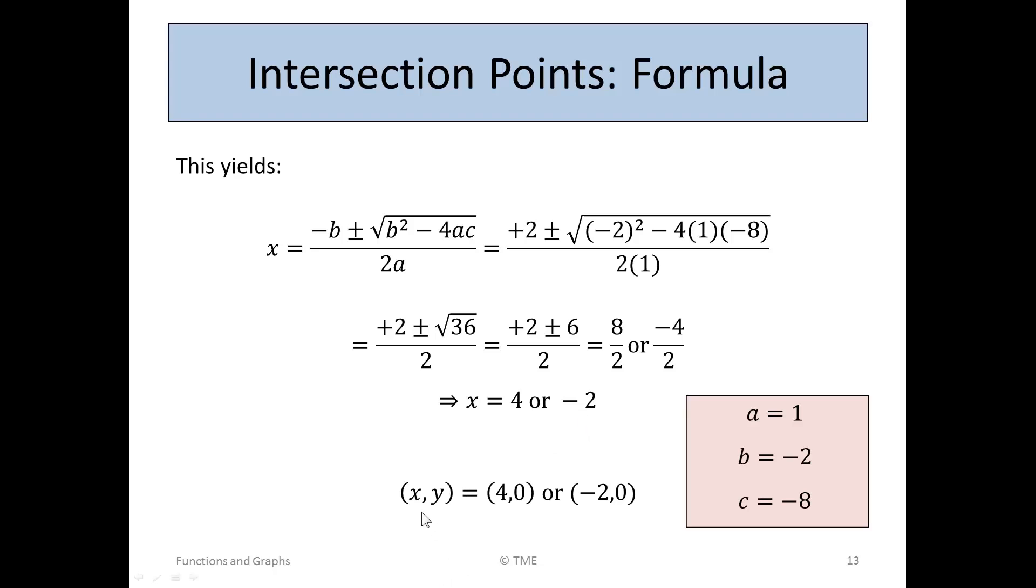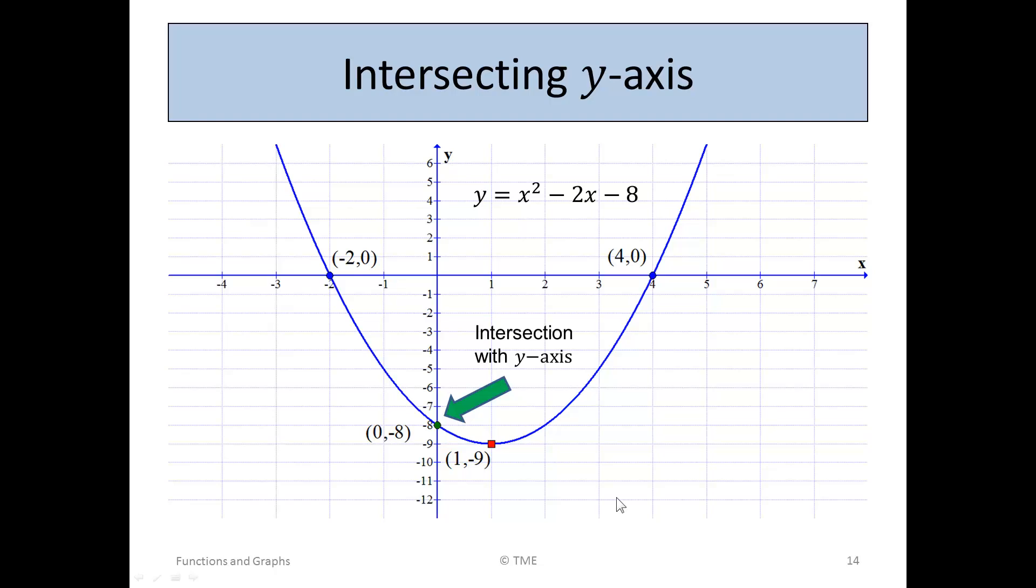Or in terms of x, y points, we know that it crosses at 4, 0 because y was 0, or minus 2, 0. So they were their points of intersection. Minus 2, 0 and 4, 0.